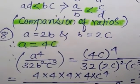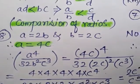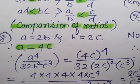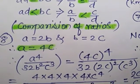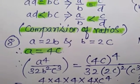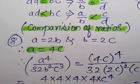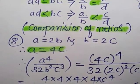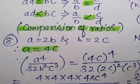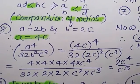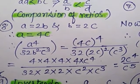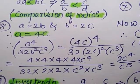Given A is equal to 2B and B is equal to 2C, therefore A is equal to 4C. Putting this value into the equation A⁴ divided by 32B²C³, we get the value 2/C.